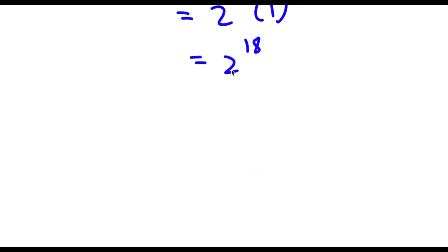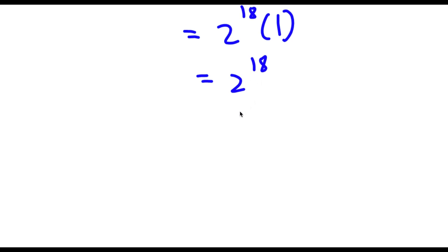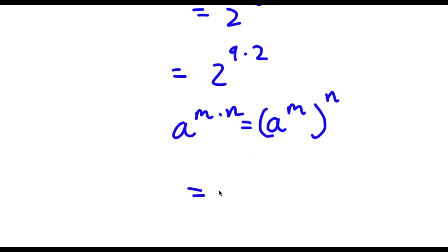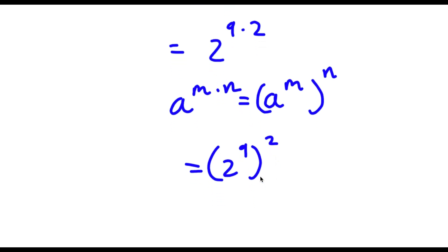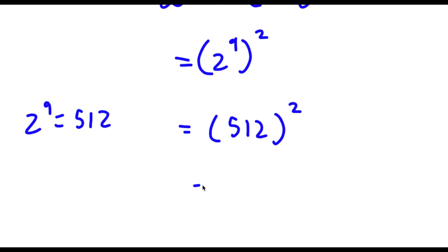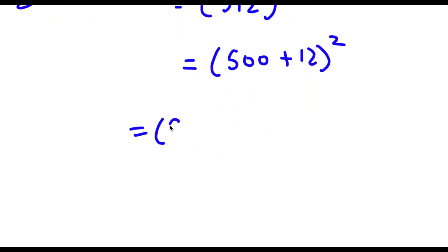Now let's find the exact value of 2 to the power of 18. I rewrite this as 2 to the power of 9 times 2, since 18 equals 9 times 2. Using the rule a^(m times n) equals (a^m)^n, this equals (2 to the power of 9) to the power of 2. Since 2 to the power of 9 is 512, I have 512 squared, which equals (500 plus 12) squared, which is (500 plus 12) times (500 plus 12).